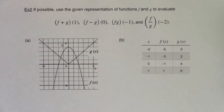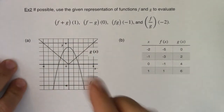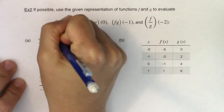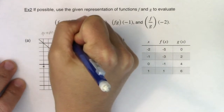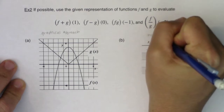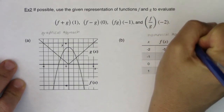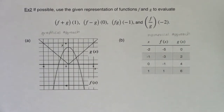Hey MAT31, let's take a look at using algebraic operations on functions through a couple of different lenses. I want to look at this problem graphically and then numerically. This is the graphical approach where we get all of our information from a graph, and this is the numerical approach where we get all of our information from a table — in contrast to example one, which was the analytical approach where we had functions and their formulas to plug into.